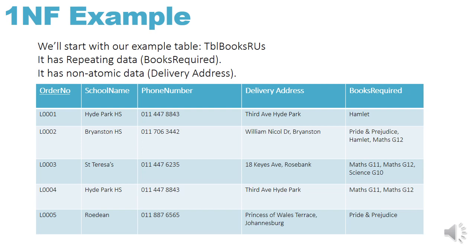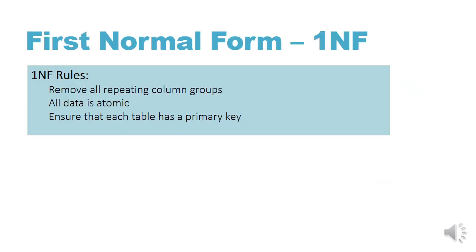Here's our first normal form example. We'll start with our example table again — I've repeated the table just for revision. We can see that the repeating data is in the last column, books required, because there are many books in one column. There is also non-atomic data: the delivery address contains a street name and a suburb in one field. So for first normal form, remember the rules: remove all repeating column groups, data must be atomic, and ensure each table has a primary key.